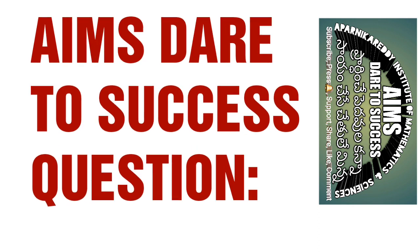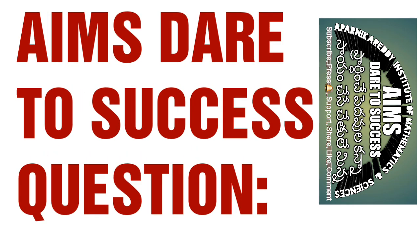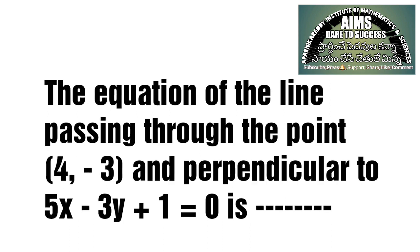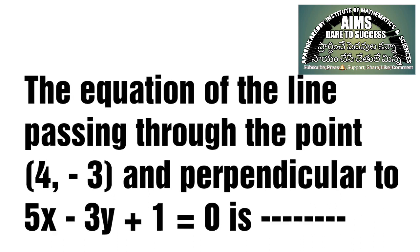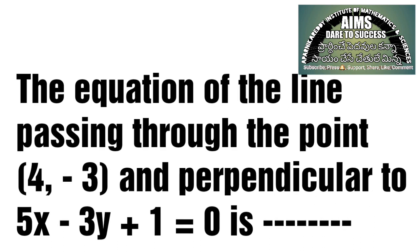The question is: Find the equation of the line passing through the point (4, -3) and perpendicular to the line 5x - 3y + 1 = 0.